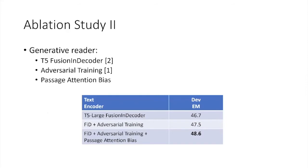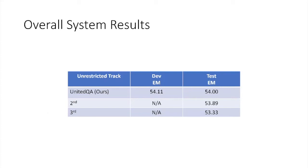Next, we present the ablation study on the generation part. Specifically, we observe both adversarial training and our proposed attention bias can effectively enhance the generative reader. By leveraging the advantage of both extractive and generative models in a hybrid approach, our submission is the best-performing system based on the automatic evaluation. Thank you.